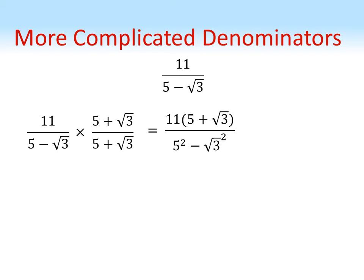If you wonder where this has come from, try multiplying those two brackets together and expanding yourself and see what you get. Following through our working, five squared minus root three squared gives us 22. So we've ended up with 11 lots of five plus root three all over 22, which we can simplify to give us five plus root three over 22.